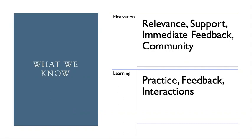Research over many decades has helped us understand that, regardless of the learning environment, there are certain things that always have a significant positive impact on learning. We know, for instance, that student motivation is an important factor in improved learning outcomes. There are many strategies to increase motivation, but a few of the more important ones include highlighting the relevance of the content, indicating clearly where to get support when it's needed, providing timely feedback, and developing community among students and the teacher.